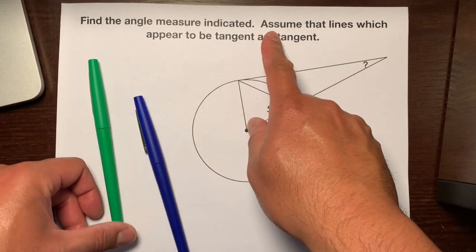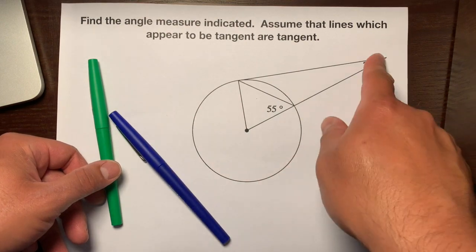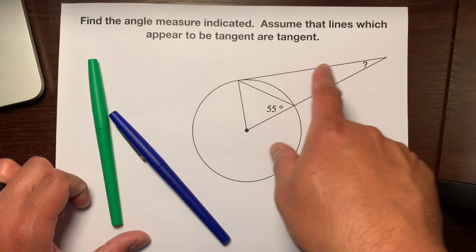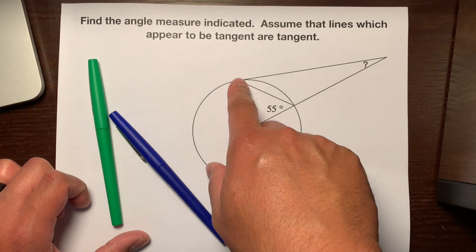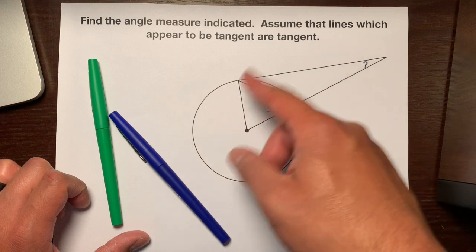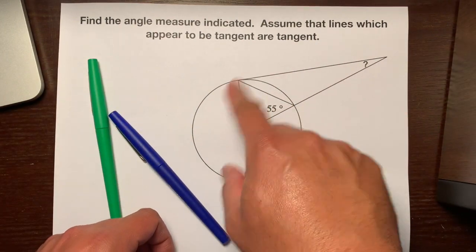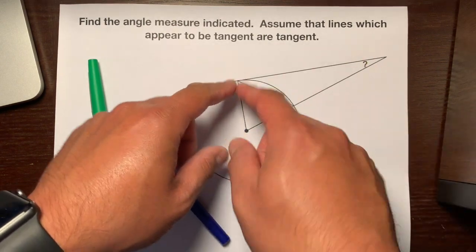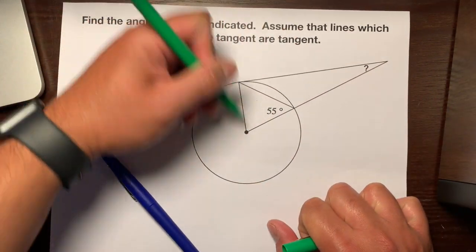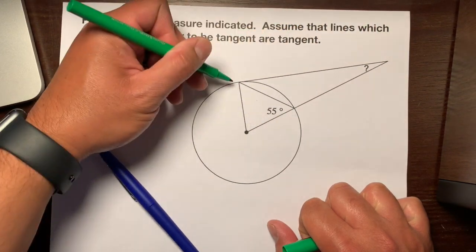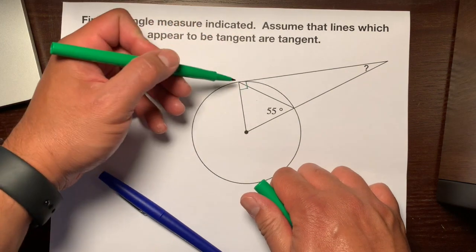First, let's read the instructions: assume that lines which appear to be tangent are tangent. This line right here appears to be tangent because it appears to touch the circle at exactly one point, and here's a radius that touches that point of tangency. If you remember from the previous video, when a radius and a tangent line intersect at the point of tangency they make perpendicular lines, and perpendicular lines make 90 degree angles. So this angle is 90 degrees because they are perpendicular.